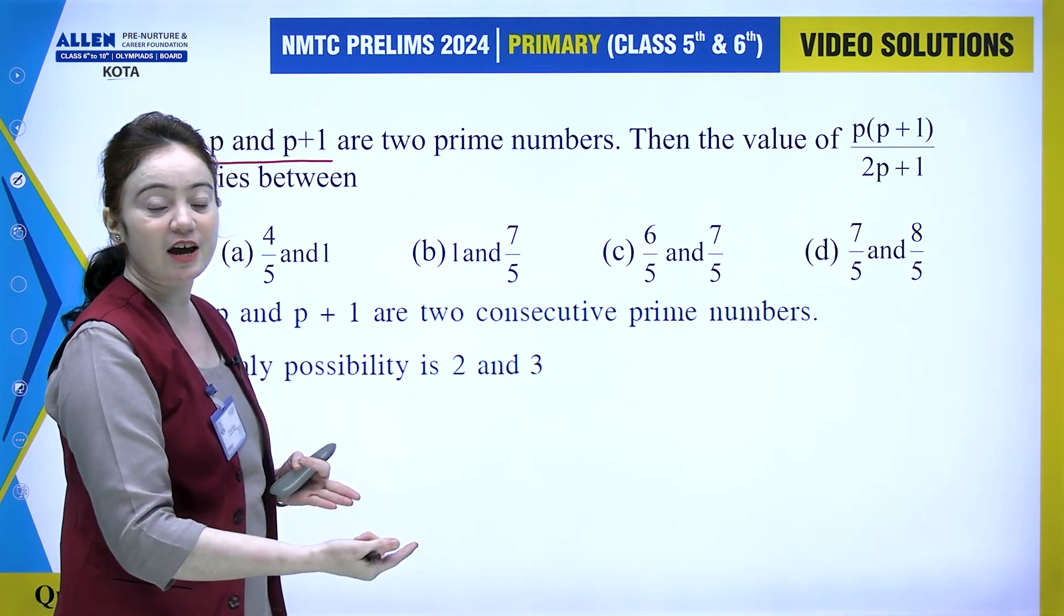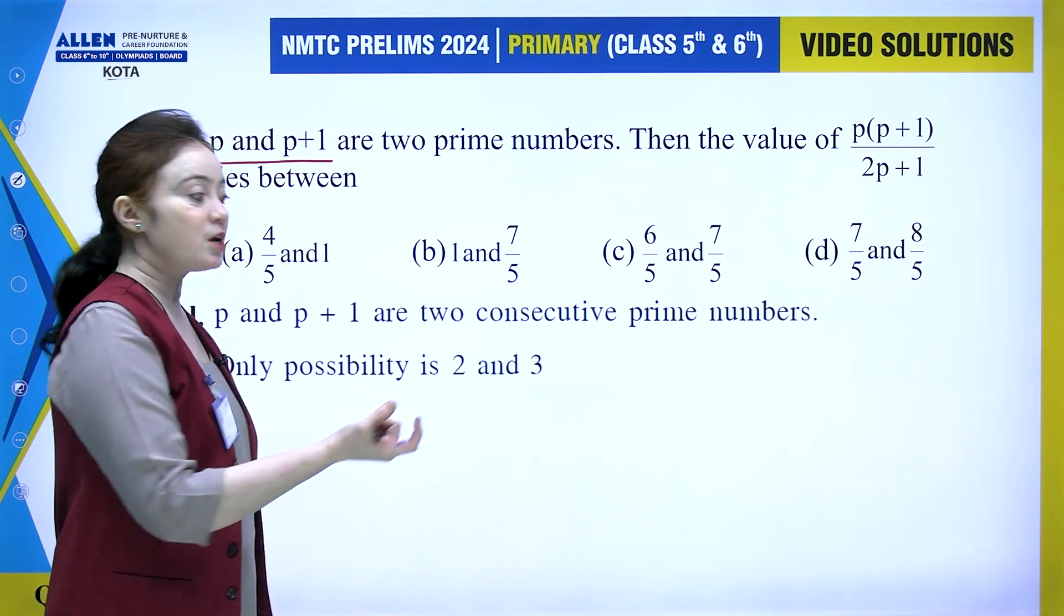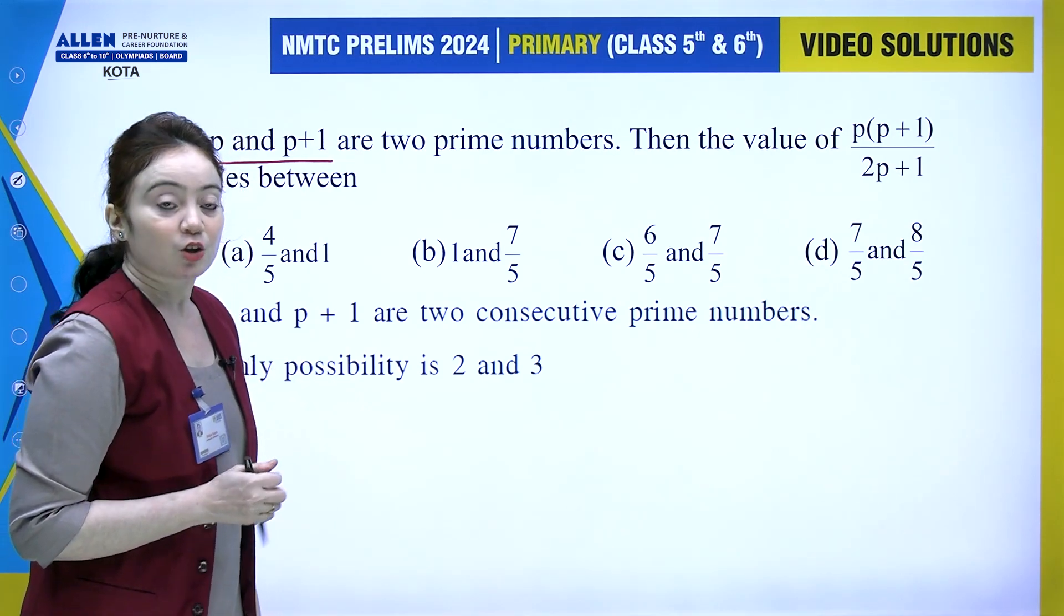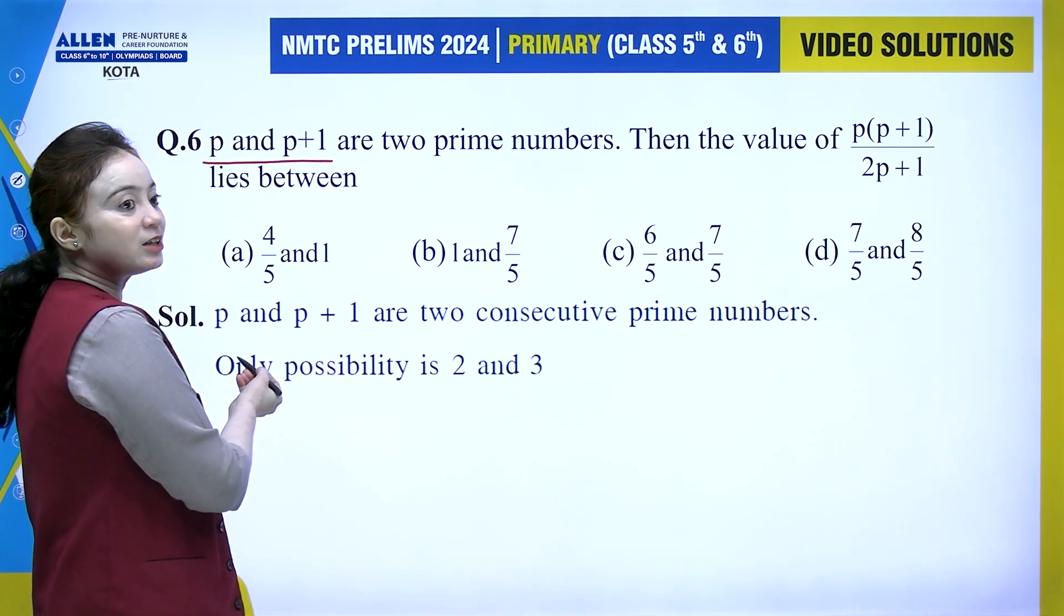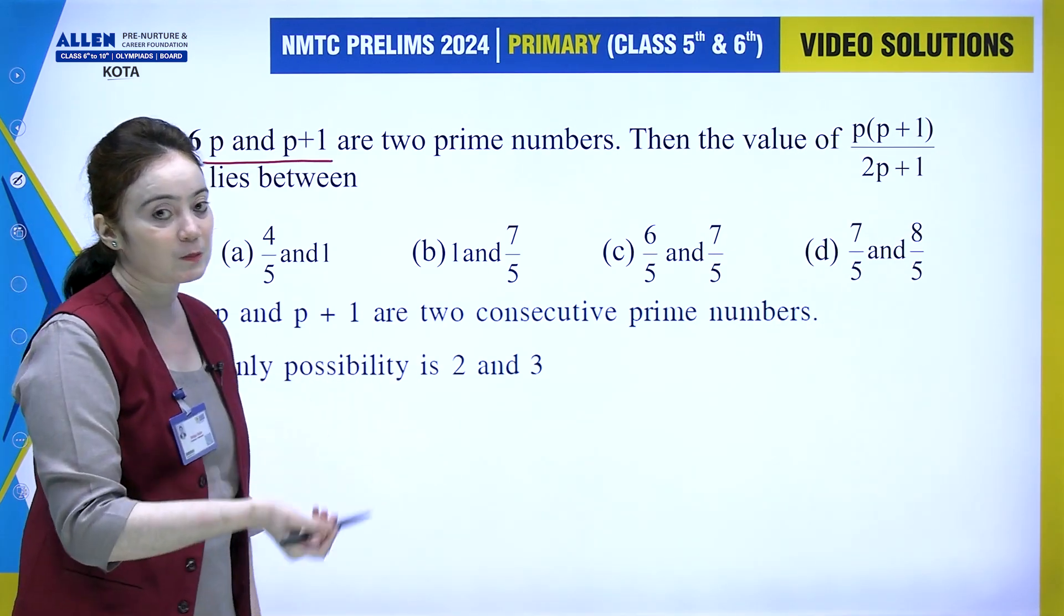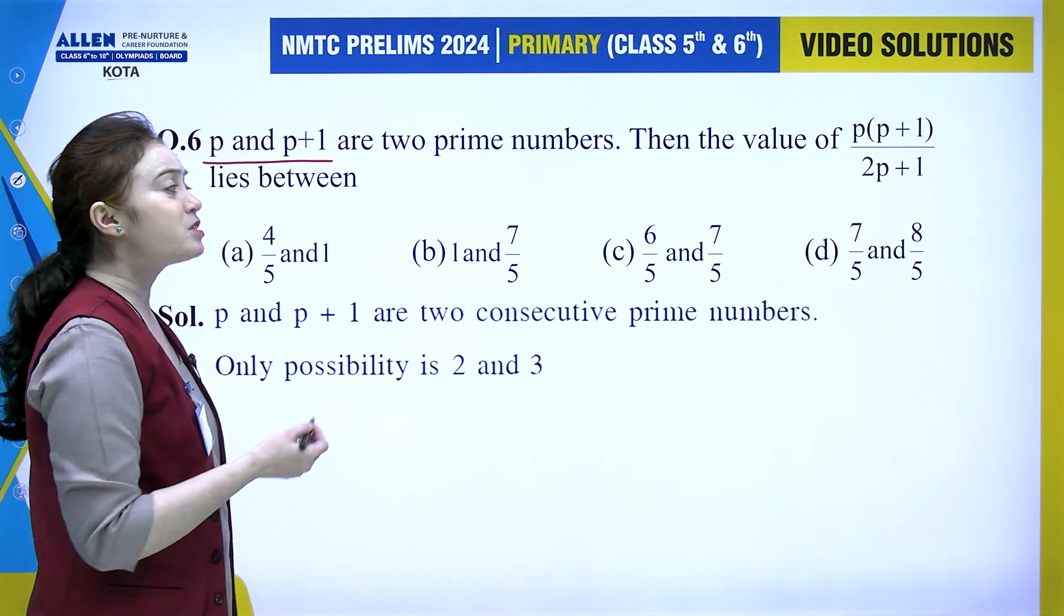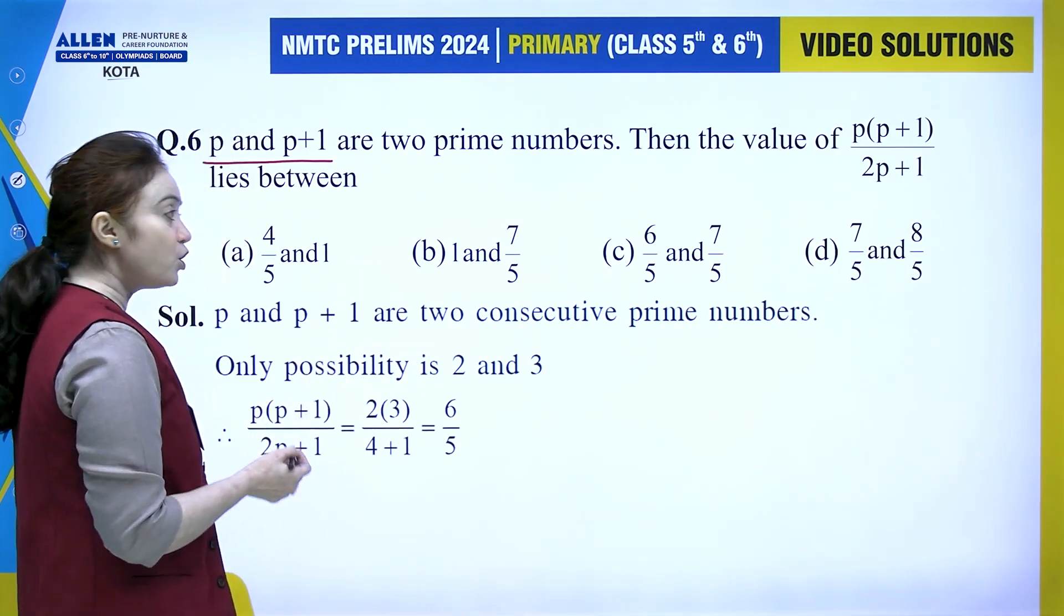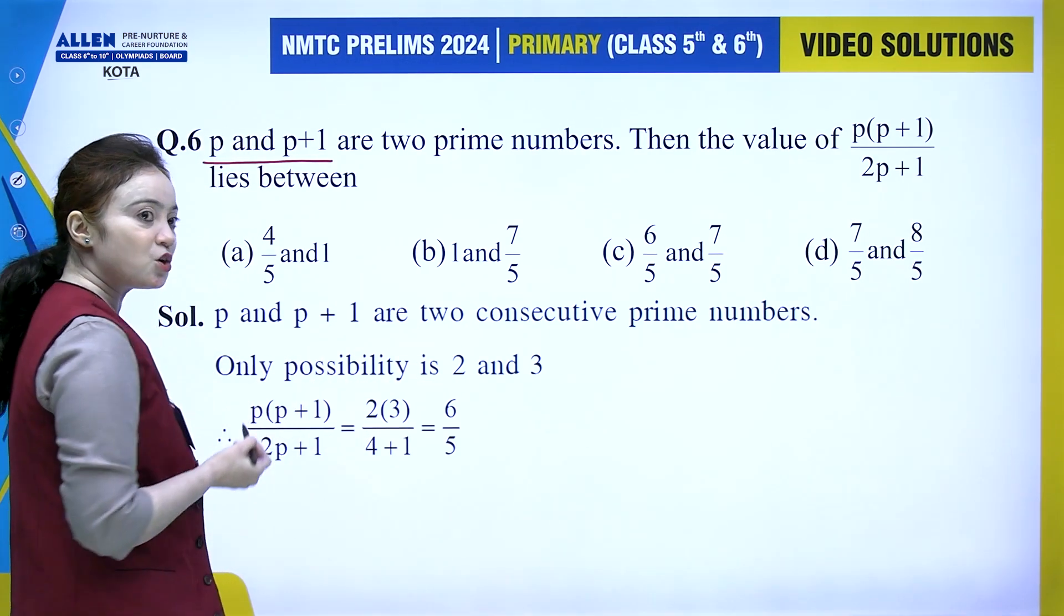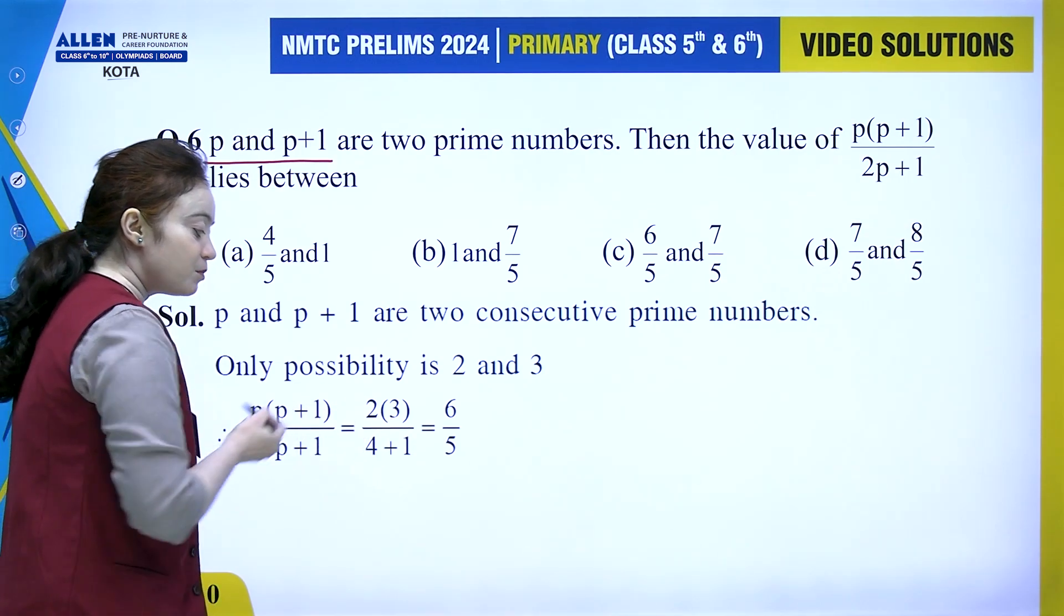So these two numbers will definitely be 2 and 3. P will be 2 and P plus one will be 3. Now we simply need to find the value of P into P plus one upon 2P plus one. P is 2, P plus one is 3.